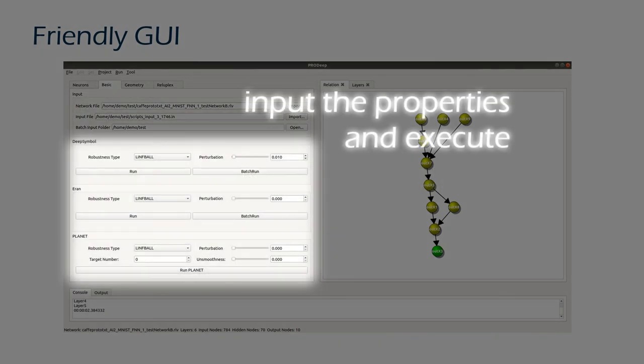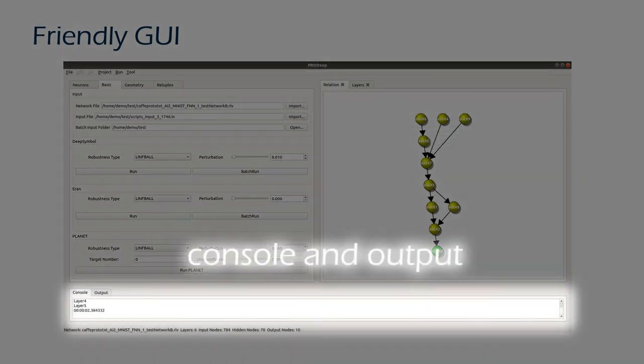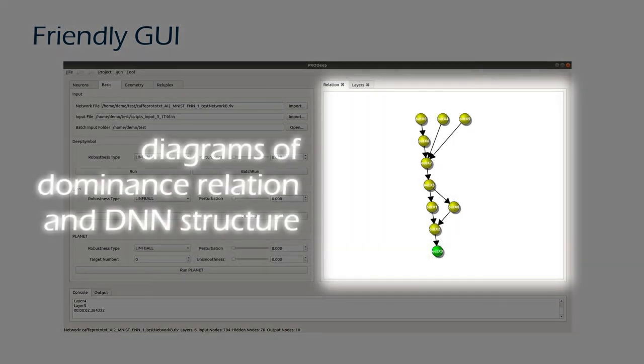The middle left part provides different properties and verification methods. Output information and debugging information are located at the bottom of the interface. The diagrams of the dominance relation and the DNN structure are on the right side.